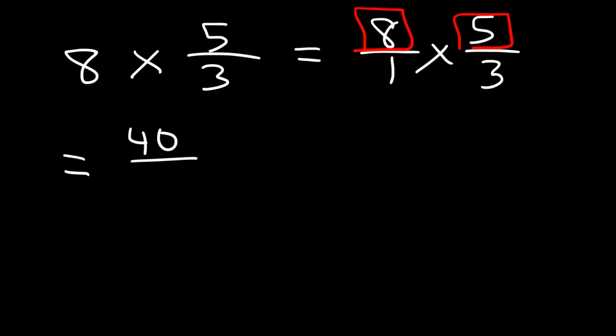And then if we multiply 1 and 3 it's going to give us 3. So our answer is 40 over 3 as an improper fraction.